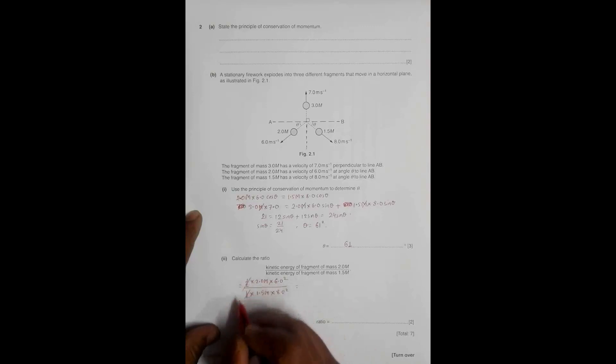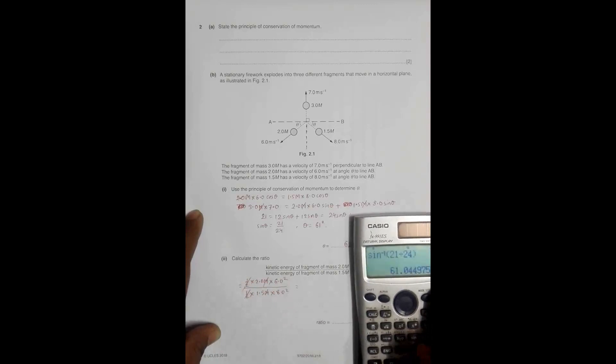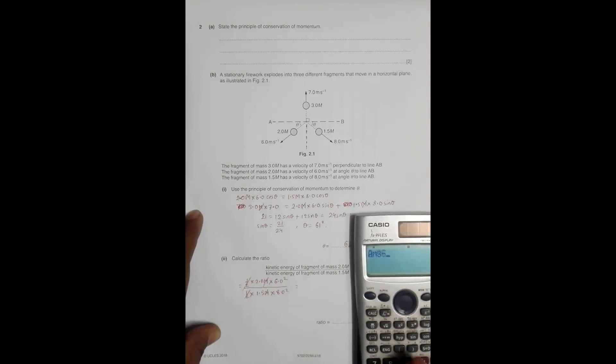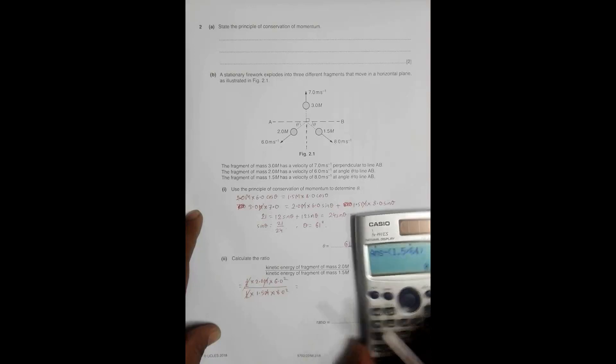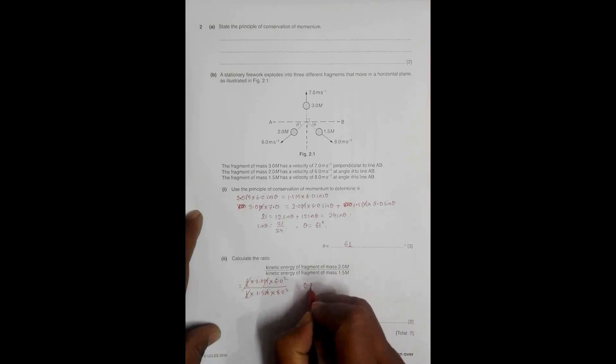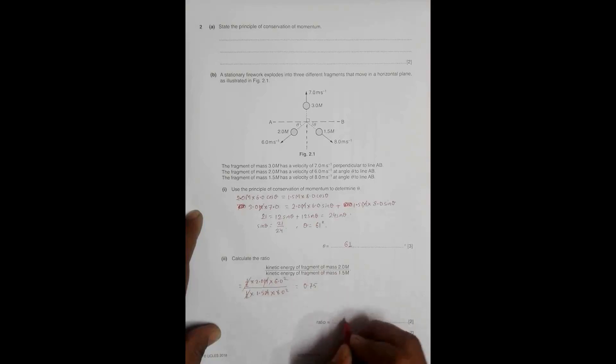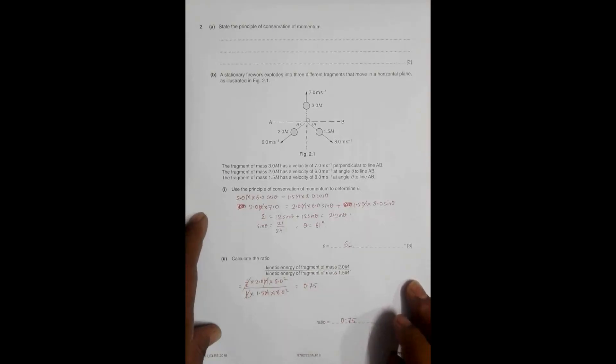So this gives us m cancels out. 2 into 6 squared is 36 divided by 1.5 into 8 squared is 64, which equals 0.75. So the ratio is 0.75.